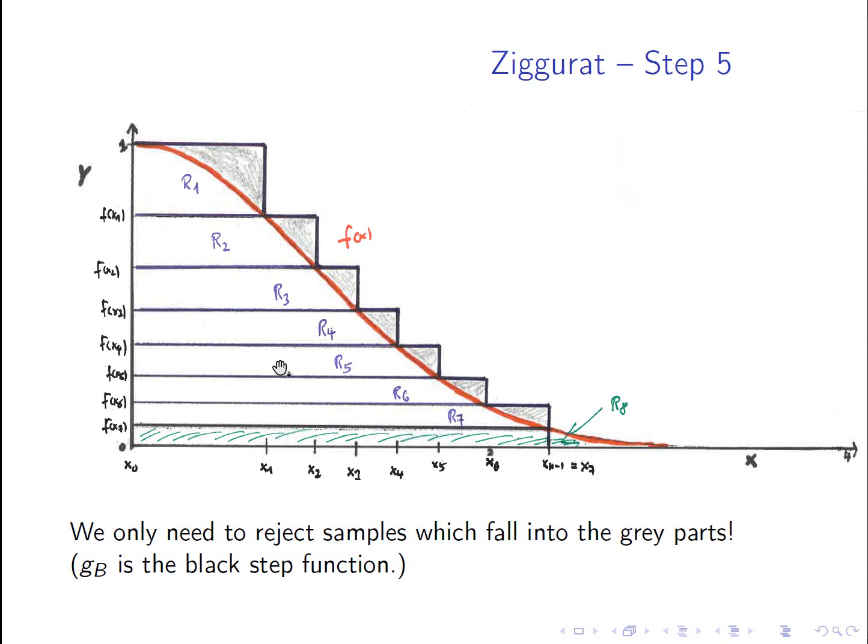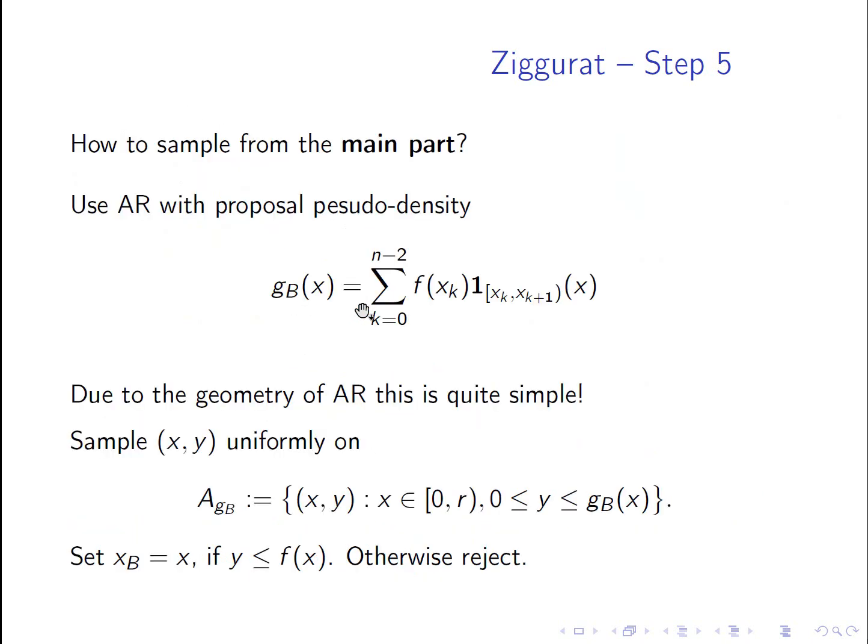So that's exactly the geometry of accept-rejection sampling. Generate a sample below the dominating curve, which is easy because we have only rectangles. And if it falls under the target pseudo density, we accept and we keep the first component. And the first component is a realization of the distribution from which we want to sample. So let's go back. Let's formalize what is the black curve here. Well, the black curve is given by this pseudo density, the pseudo density of the proposal is the step function and that's exactly the black curve I showed to you.